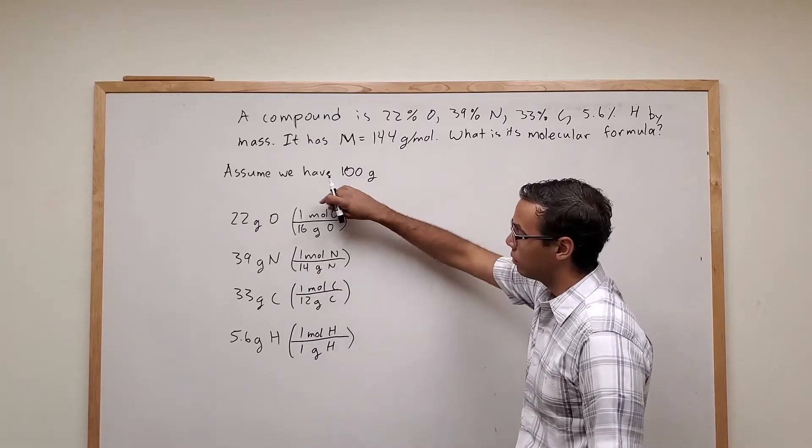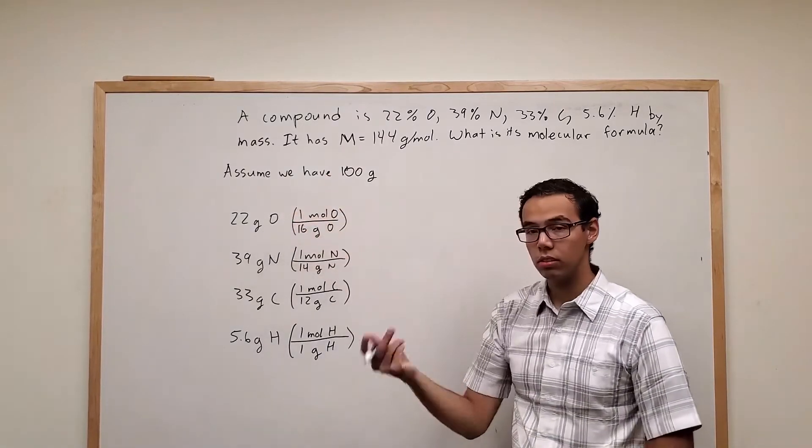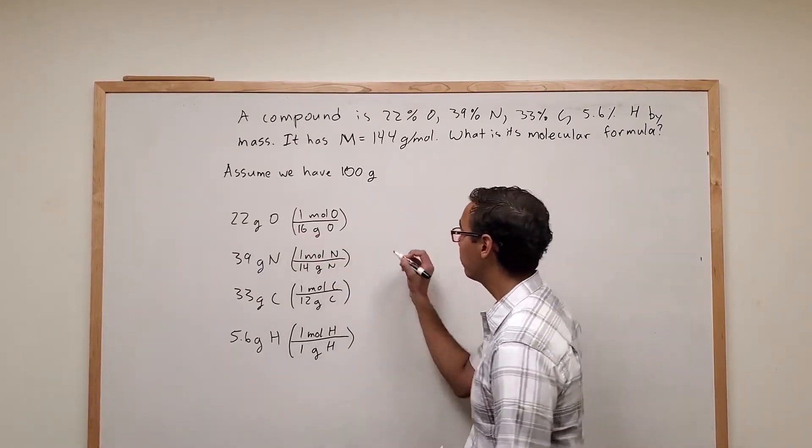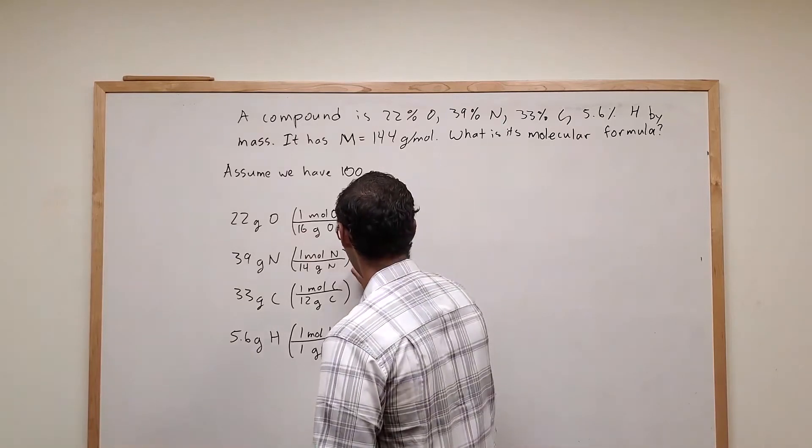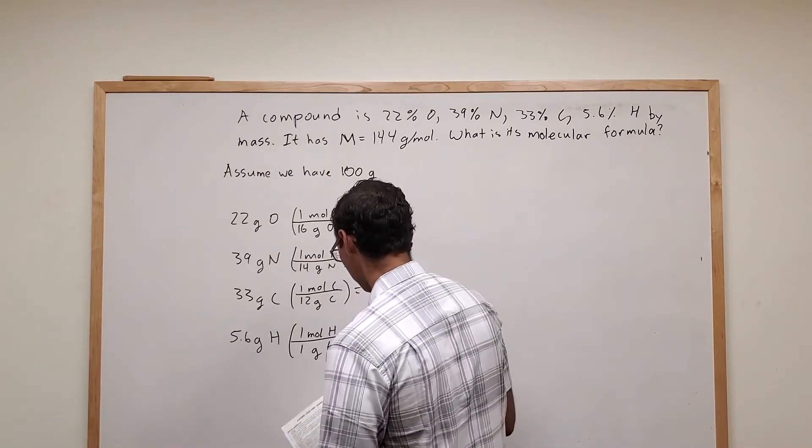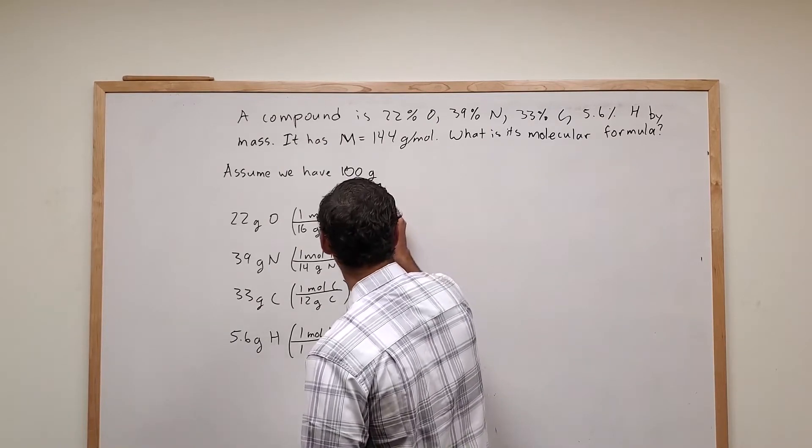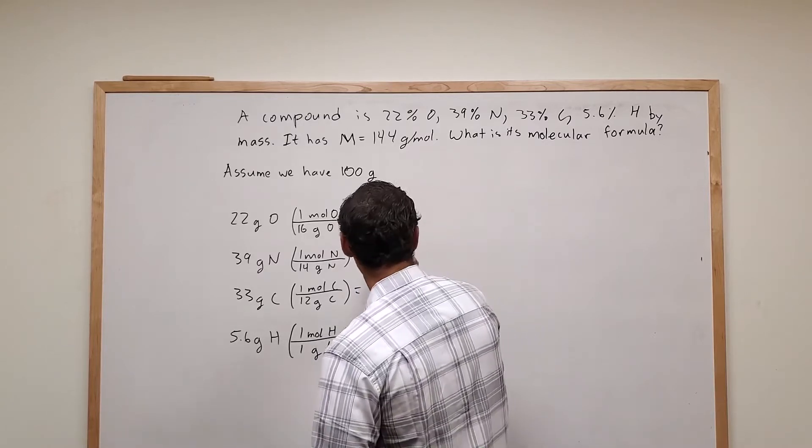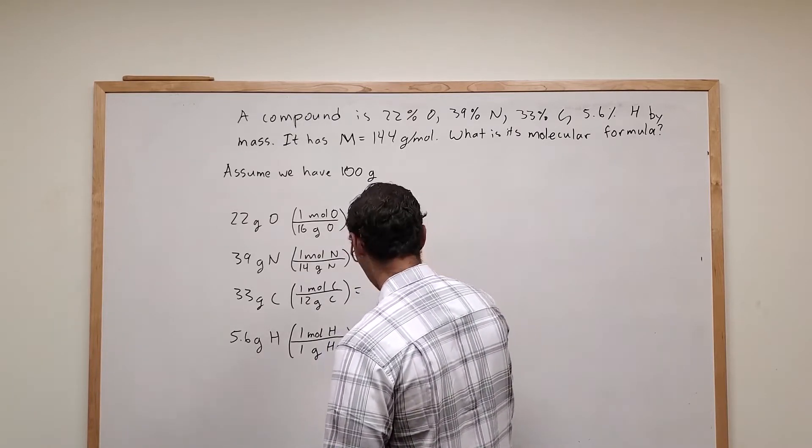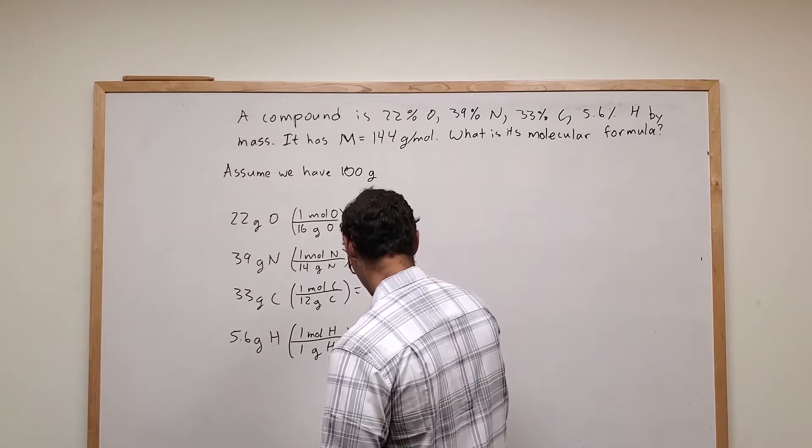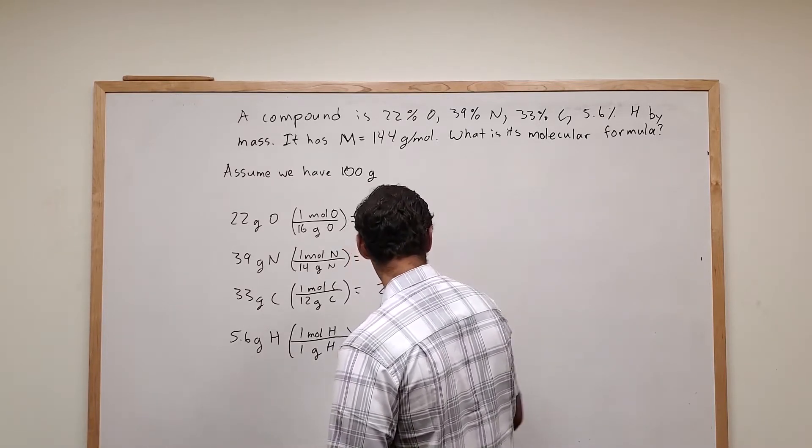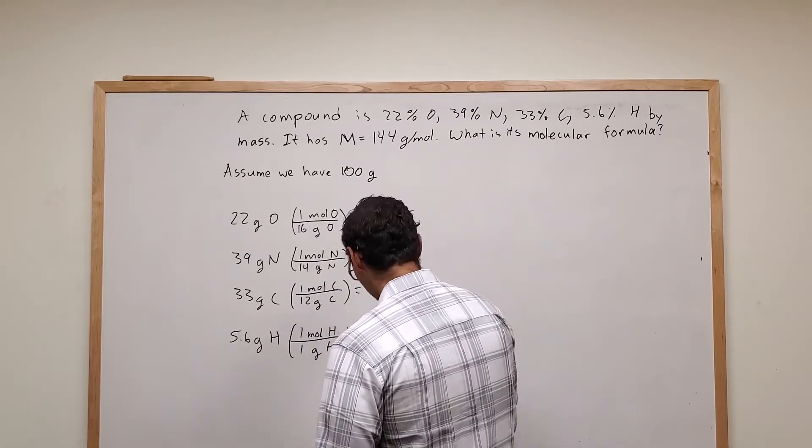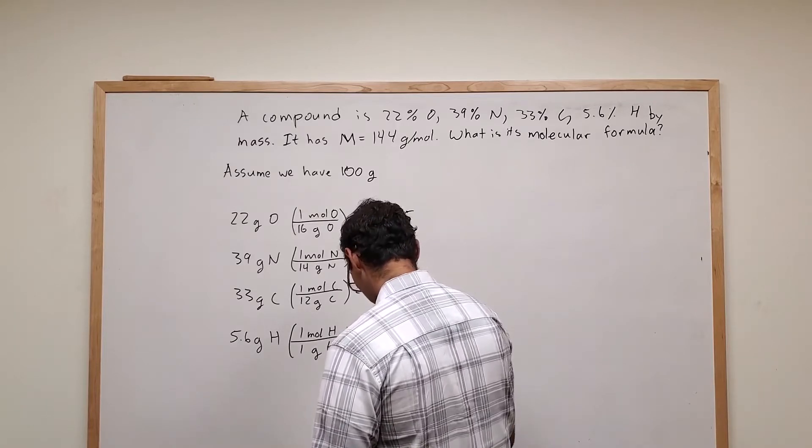Okay, and so once again we took our molar mass of each element, just inversed it so that we had moles in the numerator, grams in the denominator, and multiplied it by the mass that we had. So if you take those, plug them into your calculator, you're going to get 1.375 for oxygen. For nitrogen you're going to get 2.786. For carbon you're going to get 2.775. And then for hydrogen you're going to get 5.6.